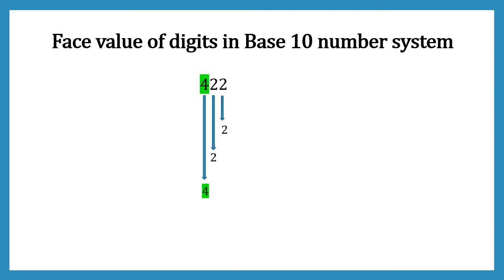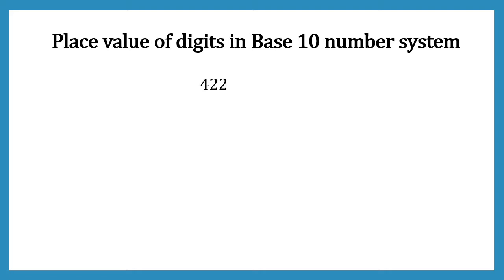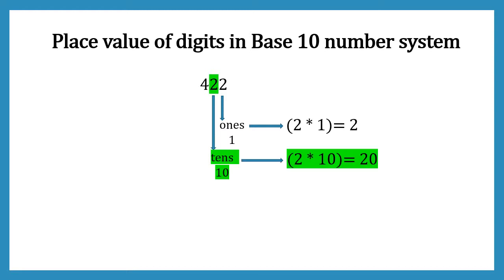Now let's look at place value. In place value, the place plays really big role. That's why we say it's place value. Let's start again from right. Here because 2 is at 1's place, 2's place value will be 2 into 1 which is 2. If we go to second 2, here it is at 10's place, so its place value will be 2 into 10 which will be 20.